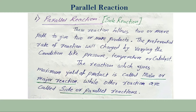The preferential rate of the reaction can be changed by varying conditions like pressure, temperature, or catalyst. Among all these reactions, the reaction which gives maximum yield of product is called the main or major reaction, while the other reaction which gives less quantity of product is called the side reaction or parallel reaction.